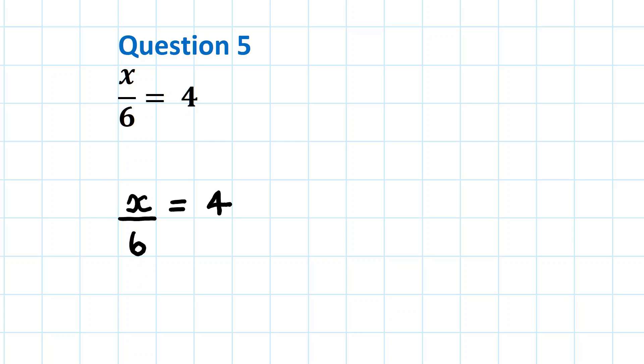Multiply the left-hand side of the equation by 6. Multiply by 6. Multiply the right-hand side of the equation by 6 also.